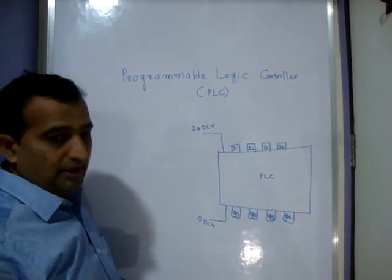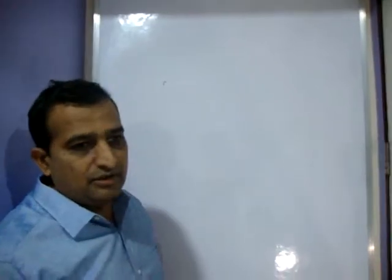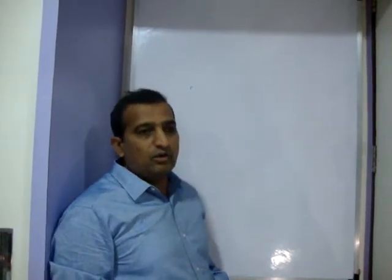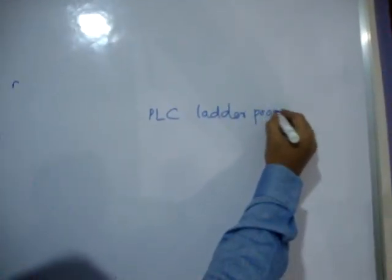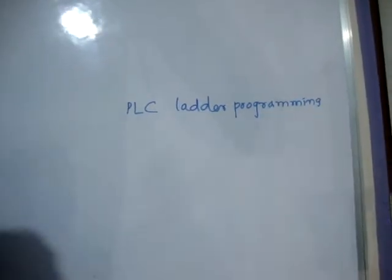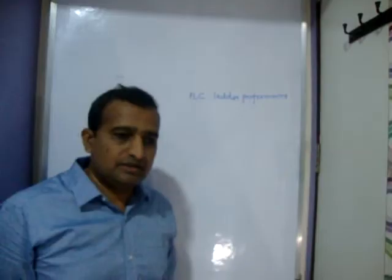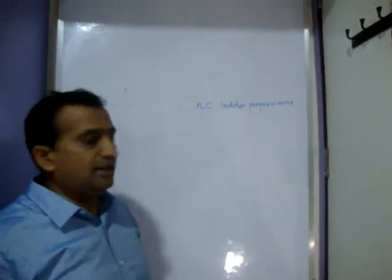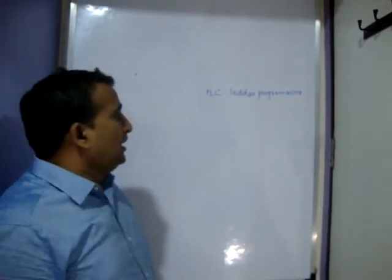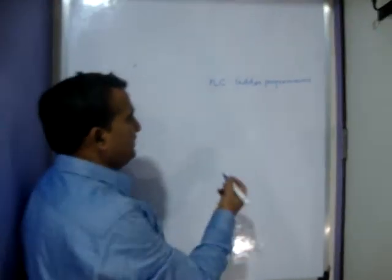There are four types of languages for PLC programming. The most powerful and widely used one is ladder programming — PLC ladder programming. Another language is the functional block diagram, but PLC ladder programming is the most widely used in industry. In PLC ladder programming we use some basic elements.